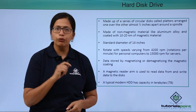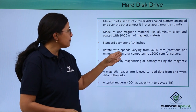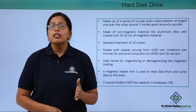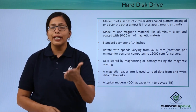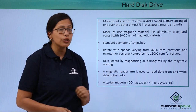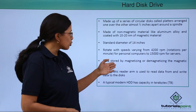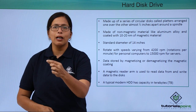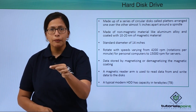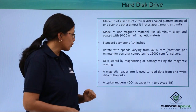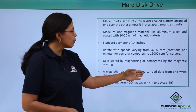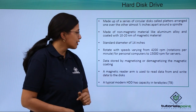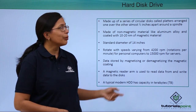The standard diameter of each disk is 14 inches. It can rotate at speeds varying from 4200 RPM to 15000 RPM, because some computers — like file servers or network servers — need very high speeds, so we use 15000 RPM hard disks there. Data is stored by magnetizing or demagnetizing the magnetic coating: a magnetic ray is passed and stored as 1, or removed as 0. A magnetic reader arm is used to read data to and from the hard disk. A typical modern hard disk drive has a capacity in terabytes.